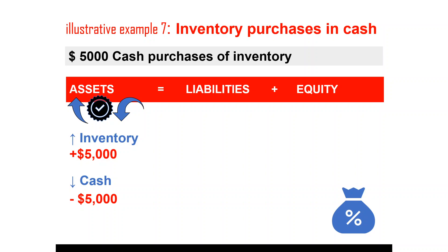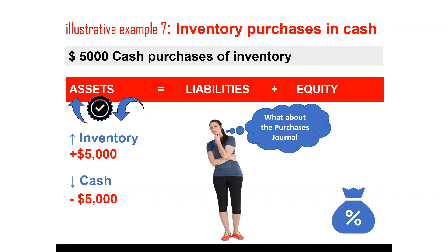This is a one-sided transaction only affecting the asset side of the equation, but still the accounting equation balances as it goes up and down by the same amount. The accounting equation and worksheets are only useful for those small entities who do not maintain journals and ledger accounts. If you know journal entries, you might be confused with this recording because inventory purchases are recorded in the purchases journal — we don't have a separate journal for inventories. But accountants do measure inventories separately; we call it inventory valuation.